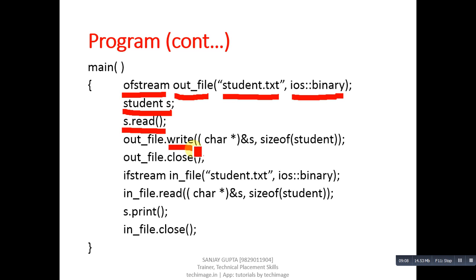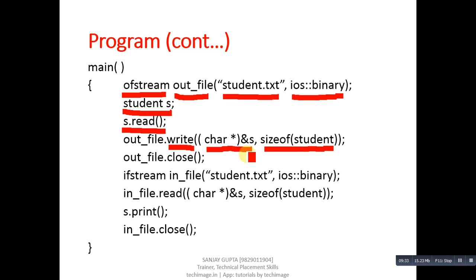The write function takes two arguments: a character pointer with the address of s — so the object's address is typecast to a character pointer — and sizeof(student), which gives the total number of bytes of the class. From the beginning address to the number of bytes specified, the data is stored into the file. Then outfile.close closes student.txt.